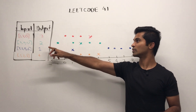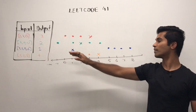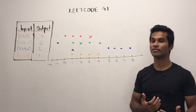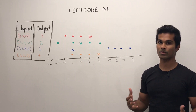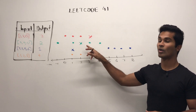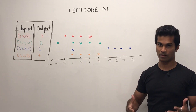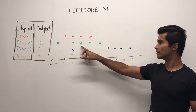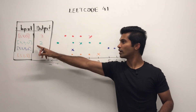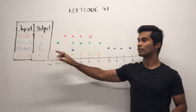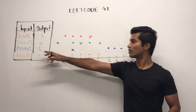Similarly, for the green example: 3, 4, negative 1, and 1. We can have negatives in here, we can have very large numbers, but the first missing positive is in this case 2. We have a 1, 3, 4, negative 1, so a 2 is missing.